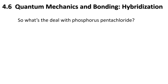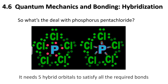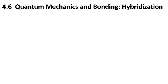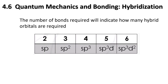What about phosphorus pentachloride (PCl₅)? It has five bonds - more than s and p orbitals can hold. We actually need five hybrid orbitals. The number of bonds required indicates how many hybrid orbitals are needed: two bonds is sp, three bonds is sp², four bonds is sp³ (one s and three p's, four letters total). For five bonds, we have one s, three p's, and one d - five letters: sp³d hybridization.